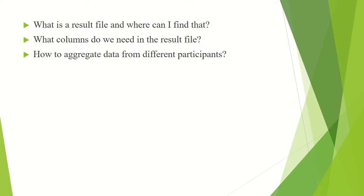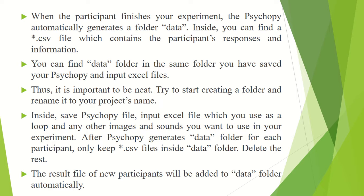I will explain what the result file is, where we can find it, what columns we need in the result file, and how we can aggregate data from different participants into just one file. When participants finish your experiment, PsychoPy automatically generates a folder called 'data'. This folder is in the same folder where you have saved your PsychoPy and Excel files. Inside this folder you can find at least three files; one of them has a CSV (comma-separated value) extension — that's the result file we are going to discuss. This file contains participants' responses and information.